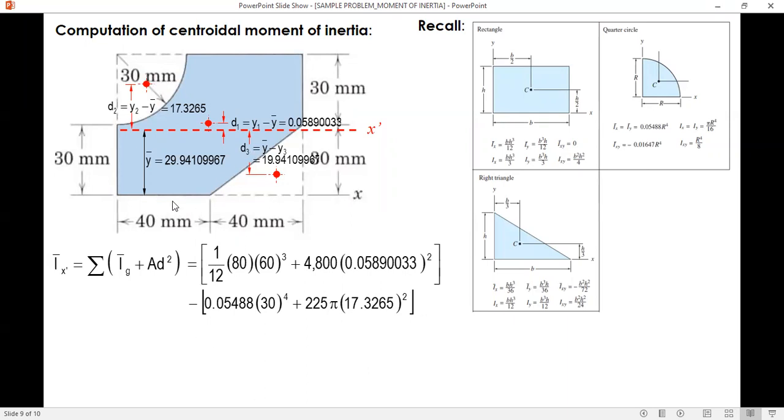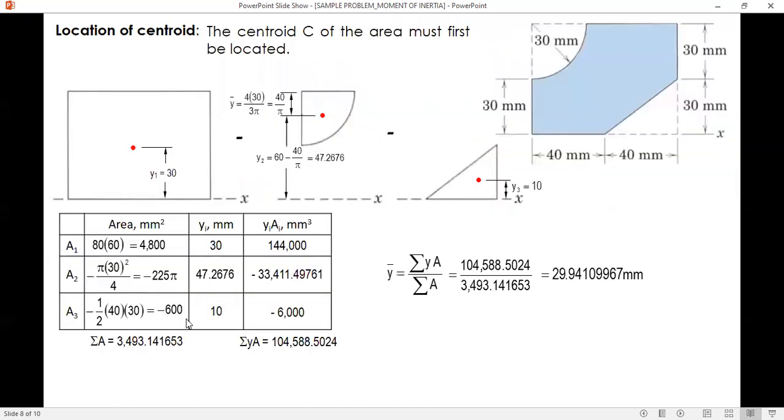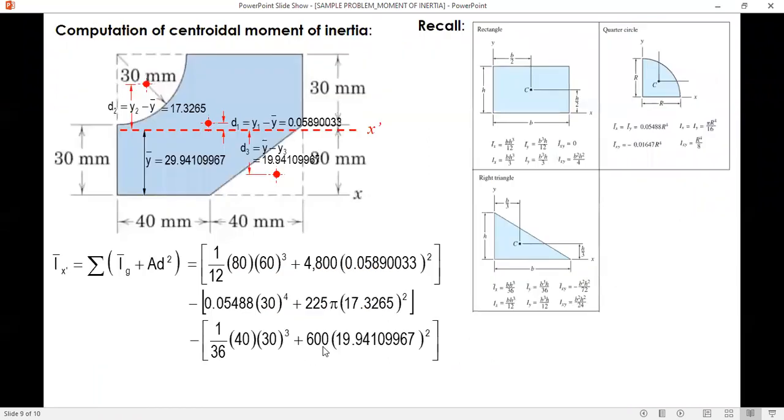And then element number 3, triangle. The centroidal of triangle is Ix equals 1 over 36 bh cubed plus area d squared. The area is 600. And simplify. And then add or subtract. The total is this. So, this is the moment of inertia with respect to the centroidal x-axis.